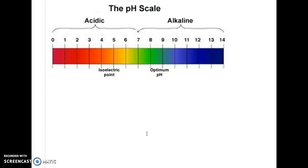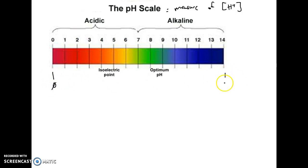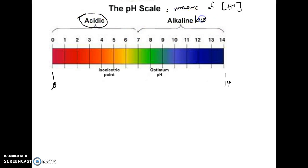The next idea is the pH scale, which is a measure of the concentration of hydrogen ions. The pH scale goes from zero — and we'll find it can actually be less than zero — up to 14 and beyond. If you are below seven on the scale, you're considered acidic; above seven is considered alkaline, also known as basic; and at seven you are neutral.